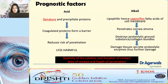Acid injuries denature and precipitate proteins, creating a barrier for further penetration, making them comparatively less harmful. Strong alkalis saponify fatty acids in the cell membrane, destroying collagen and releasing proteolytic enzymes, creating a vicious cycle of further damage. Beyond the chemical type, the quantity, duration of contact, area of contact, and depth of penetration are all important for understanding prognostic value.